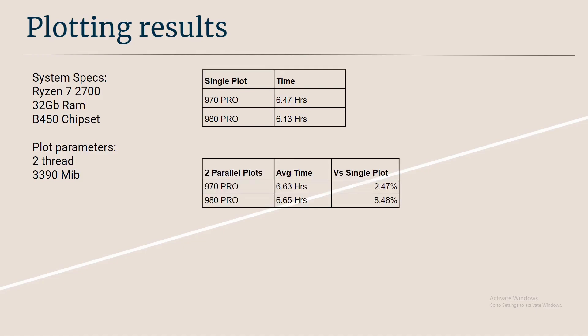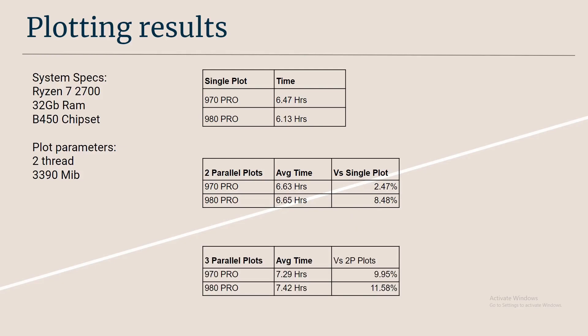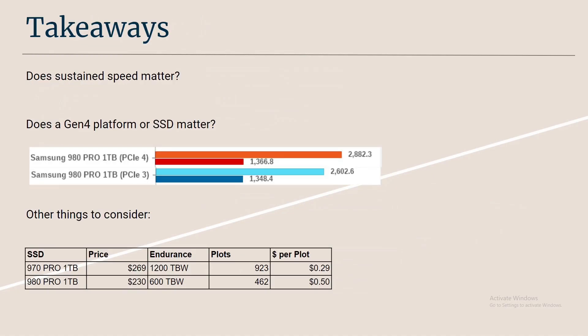However, if I increase to two parallel plots, you can see the 980 Pro is starting to lose that advantage and it's degrading more than the 970 Pro. And if I go to three parallel plots, you can see the 970 Pro is beating out the 980 Pro — and that's one of the advantages of having great sustained speeds.